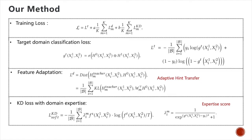We train our method according to the following loss, which considers three parts: target domain classification loss, feature adaptation loss, and knowledge distillation loss. The target domain classification loss helps us to learn a good model according to target domain labels. The feature adaptation loss helps us to measure the difference between the teacher model and student model. The knowledge distillation part considers learning from the target teacher, learning from multiple teachers to help the target domain, and also considers domain expertise to measure the domain differences.